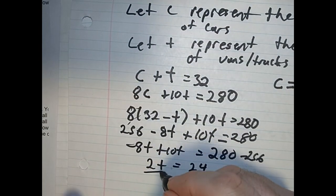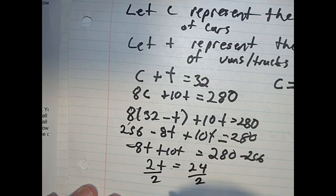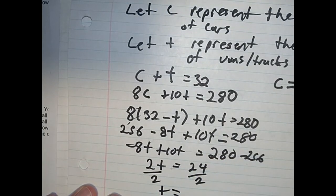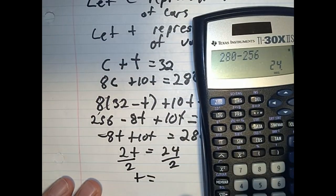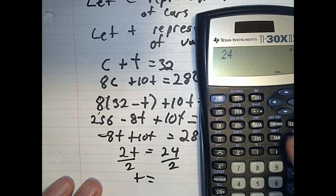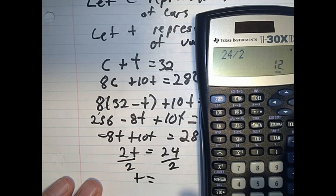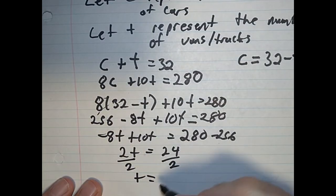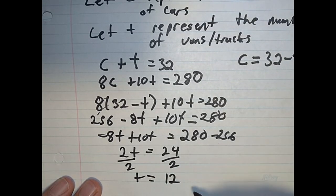Divide by 2. 24 divided by 2, let's see what that is. 12. So truck is 12. 12 trucks were washed.